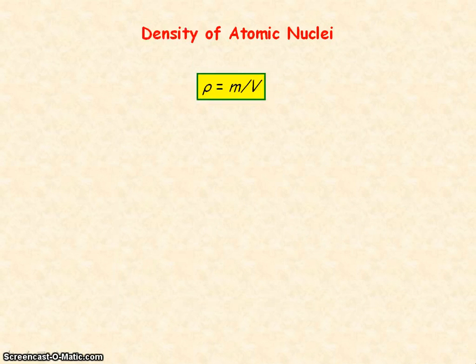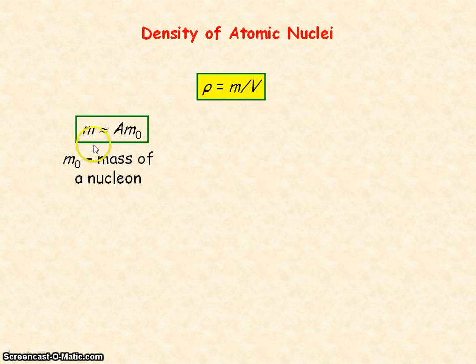To determine the density of a nucleus, we use the equation density equals mass divided by volume. And the mass of the nucleus is approximately equal to the number of nucleons multiplied by the mass of a nucleon.